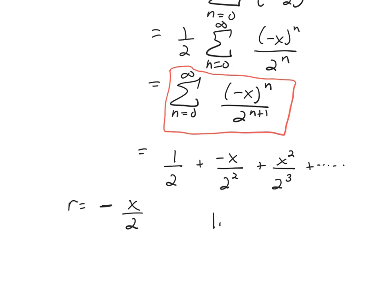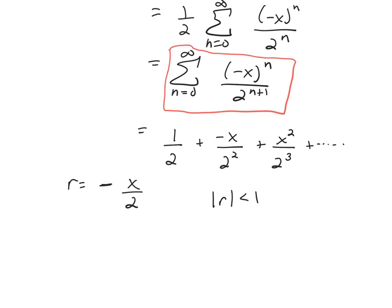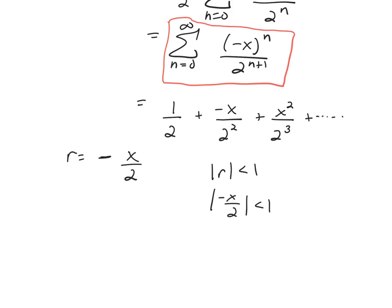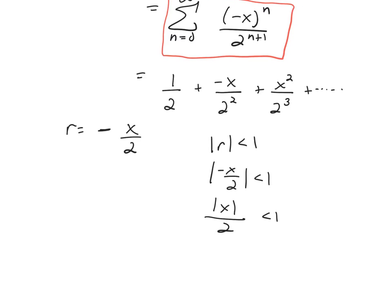Geometric series converges when the absolute value of r is less than 1 or the absolute value of negative x over 2 is less than 1, which I can simplify as the absolute value of x all over 2 is less than 1. And the absolute value of x is less than 2.